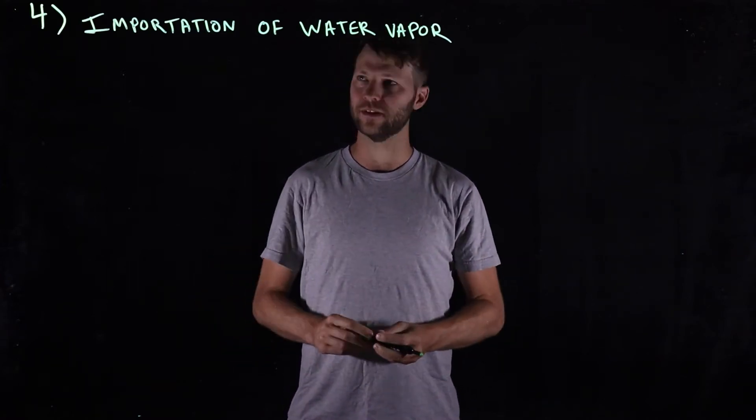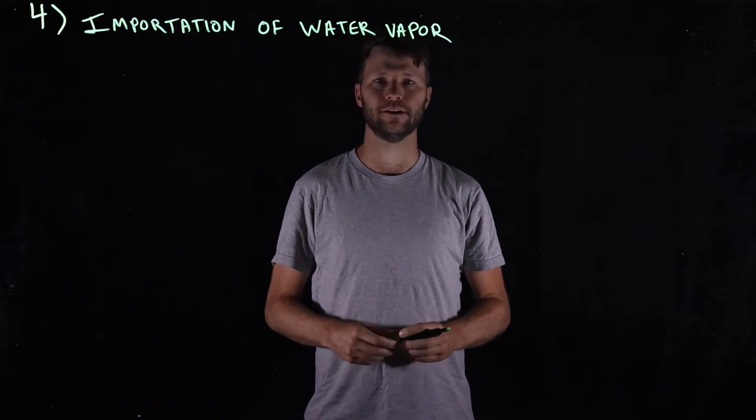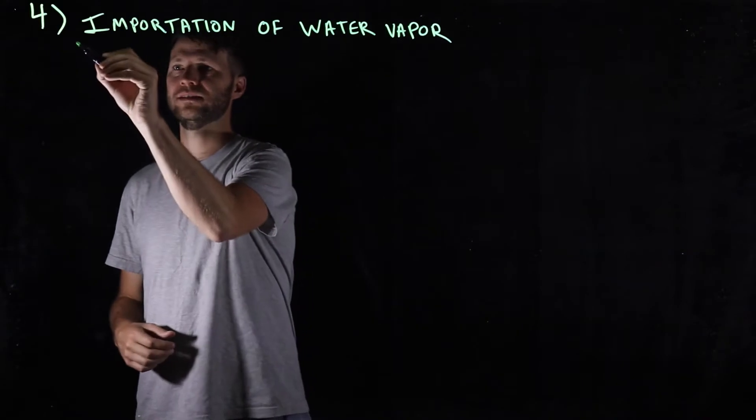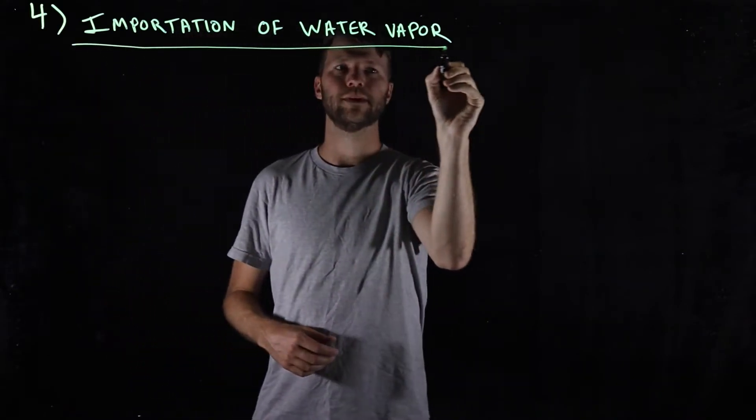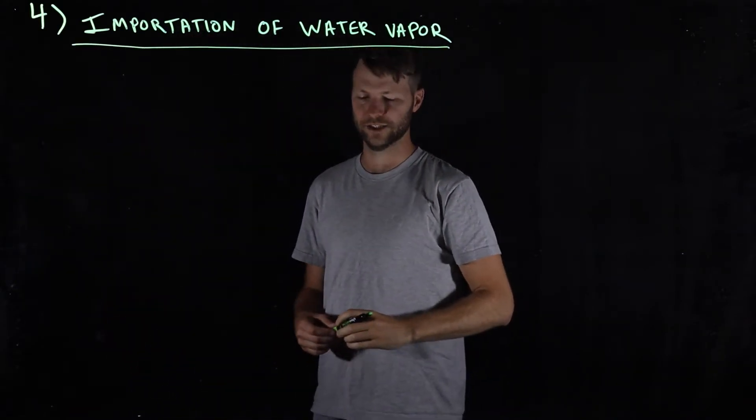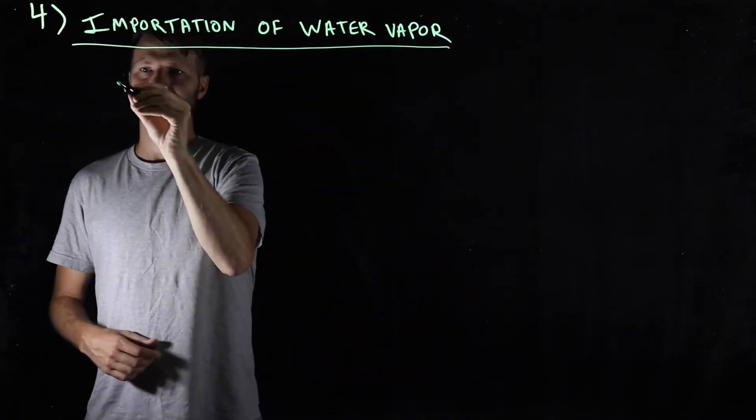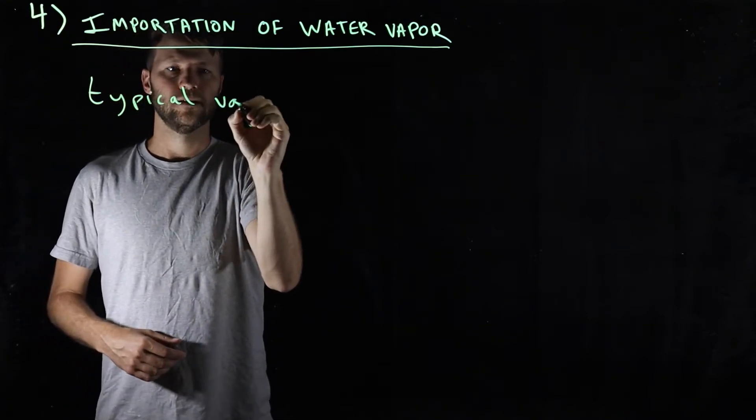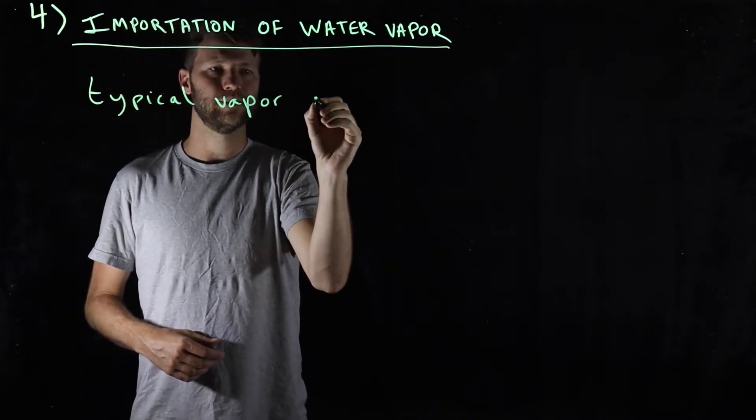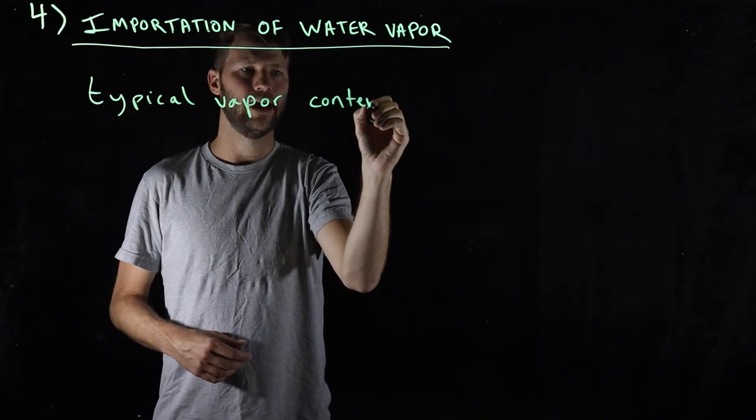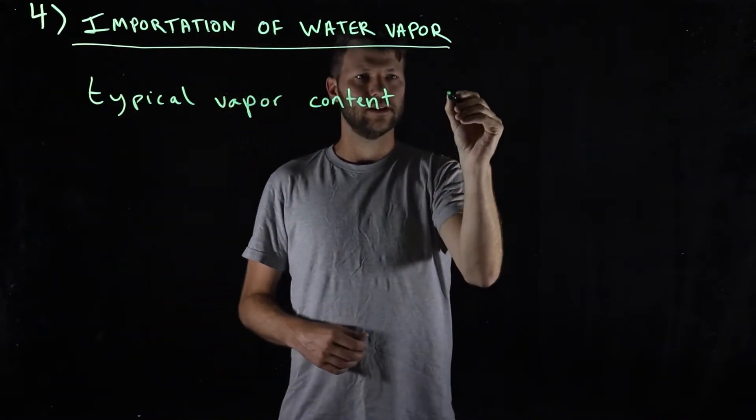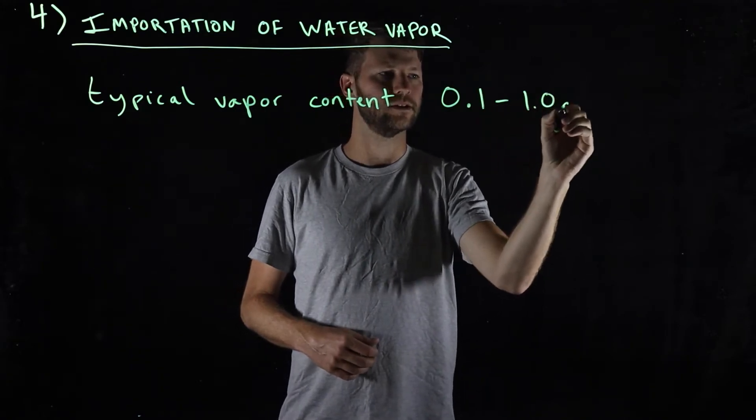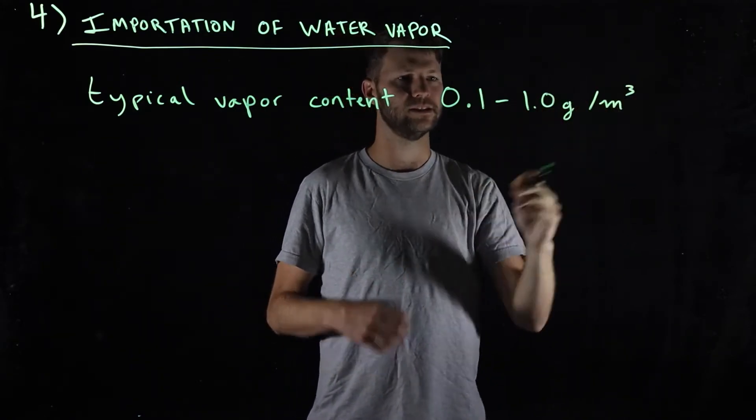Let's talk about the fourth and final step in our recipe for getting precipitation: importation of water vapor. Why is this an issue? Well, let's consider typical air in our atmosphere. It has a typical vapor content or absolute humidity ranging between about 0.1 to 1 gram per cubic meter.